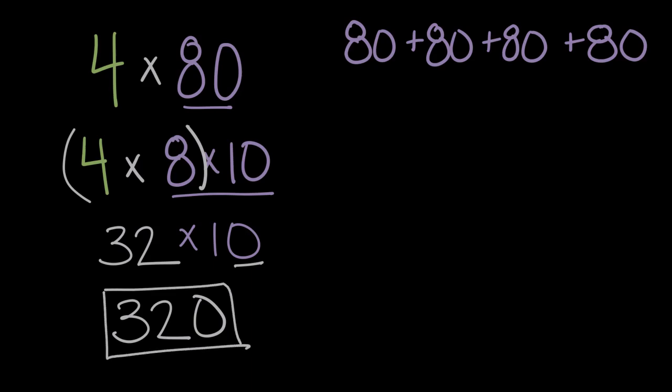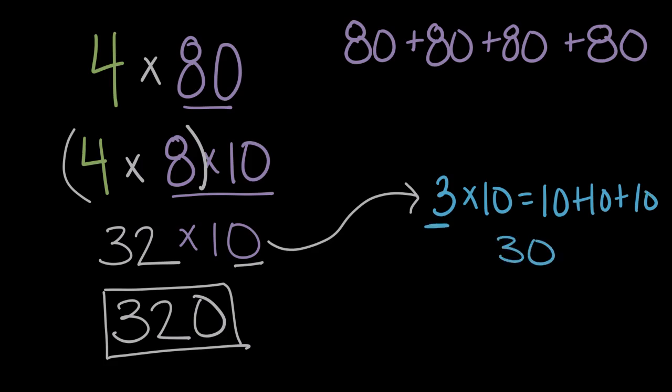And there's a reason that pattern works. We went into it in another video, but here just real quickly. 32 times 10 is 32 tens. And we can do a few examples. If we had three times 10, that would be three tens, or a 10 plus another 10 plus another 10, which equals 30, our whole number with a zero on the end.